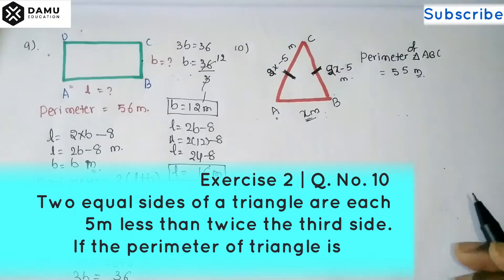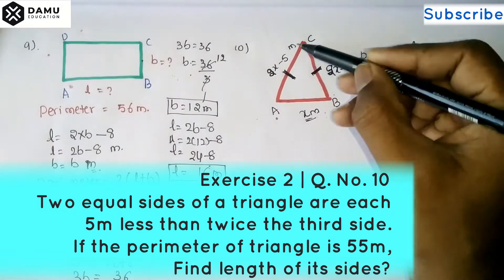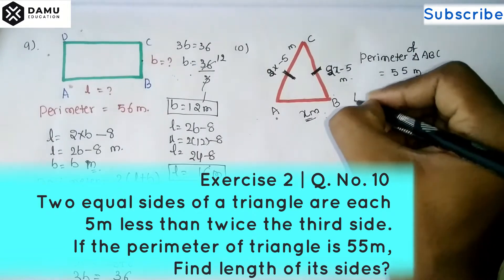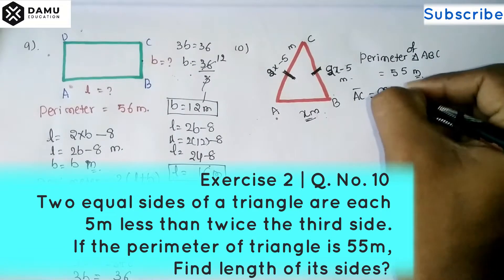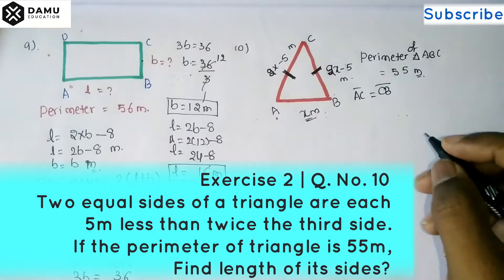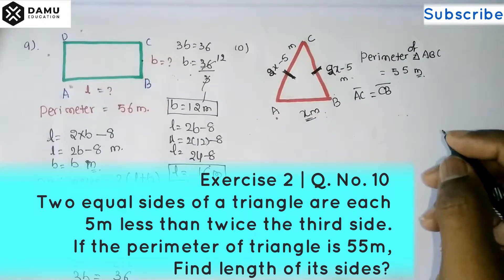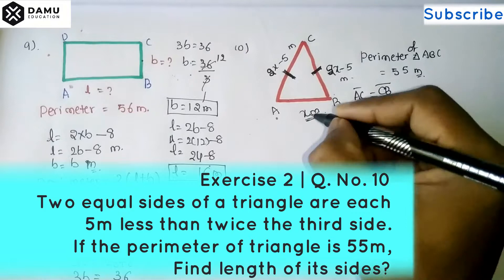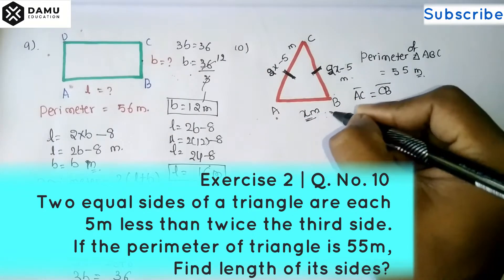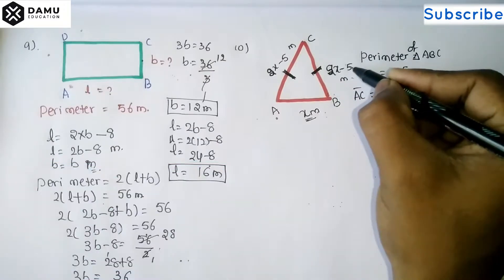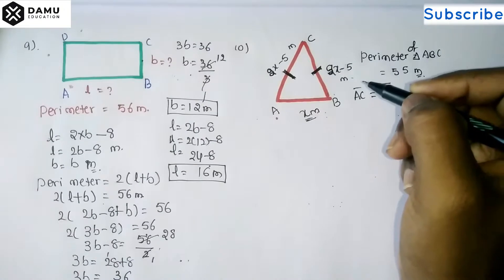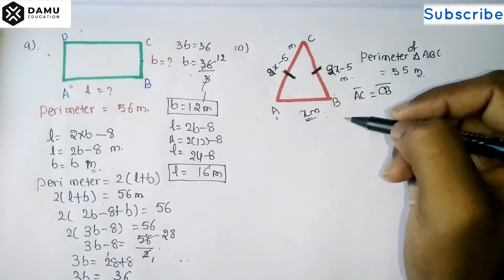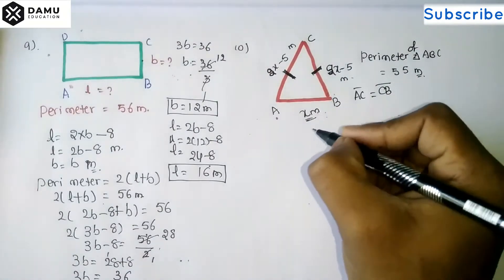In the tenth question, we have two equal sides AC and CB of a triangle. AC and CB are equal sides, and their length is 5 meters less than twice the third side AB. We take the third side AB as x meters, so each equal side = 2x - 5 meters.